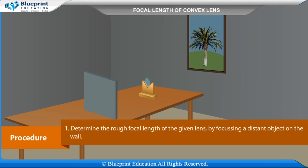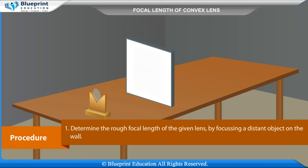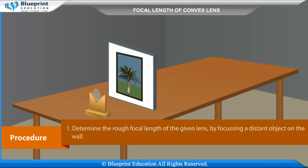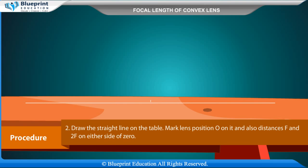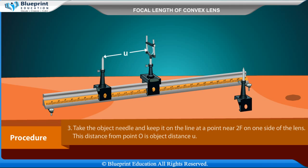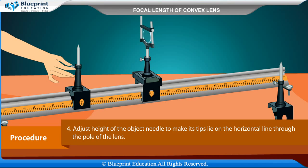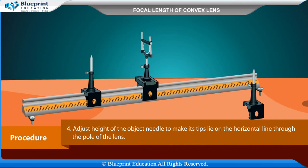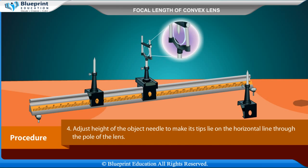Procedure: Determine the rough focal length of the given lens by focusing a distant object on the wall. Draw a straight line on the table, mark lens position O on it, and also mark distances F and 2F on either side of O. Take the object needle and keep it on the line at a point near F on one side of the lens. This distance from point O is the object distance U.